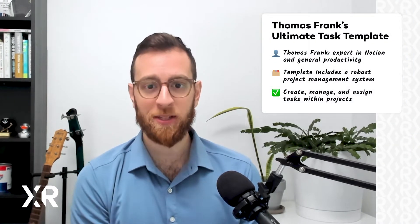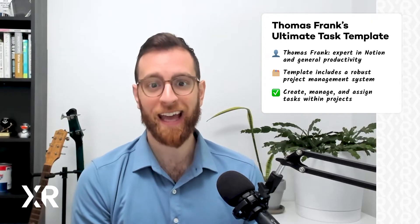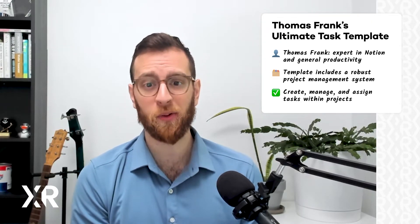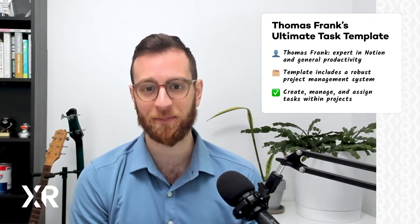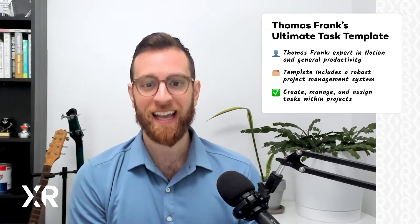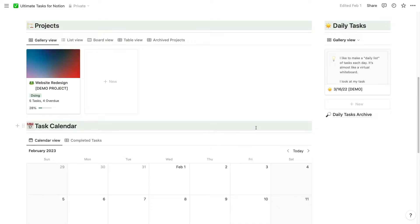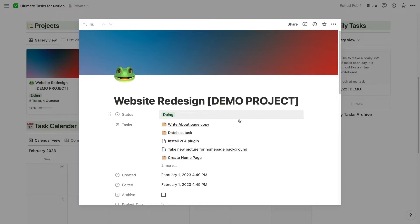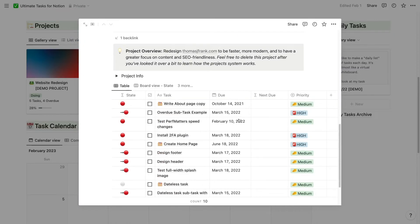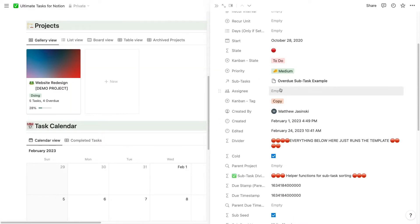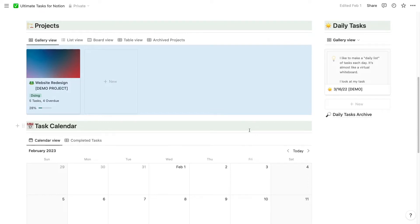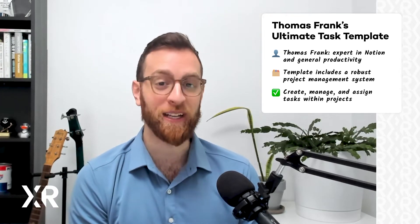First, let's take a look at Thomas Frank's Ultimate Task Template. Thomas Frank is an expert in Notion and productivity, and he has a great YouTube channel that explores how you can use Notion to get more done. His Ultimate Tasks Template is a great starting point for anyone looking to get organized and streamline their workflow. The template allows you to create projects in Notion and tasks within those projects. You can assign tasks to specific team members, set due dates, view projects in different formats like Calendar or Kanban, and even add subtasks to each task. All of this is included in the free template.